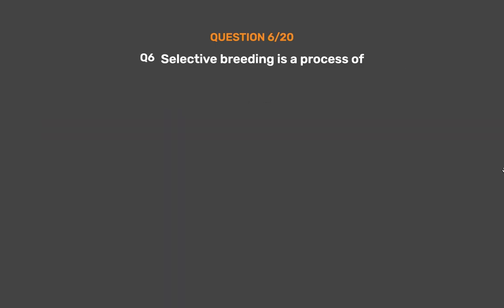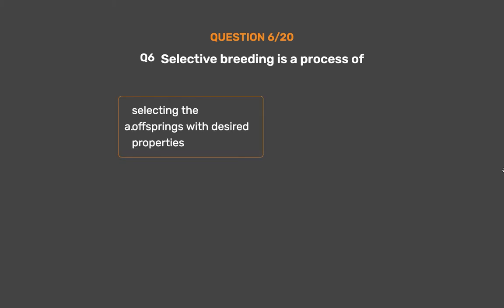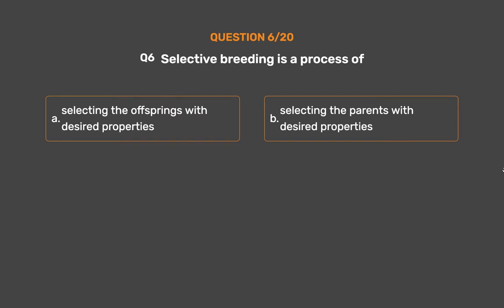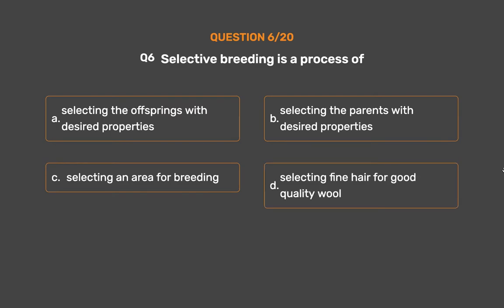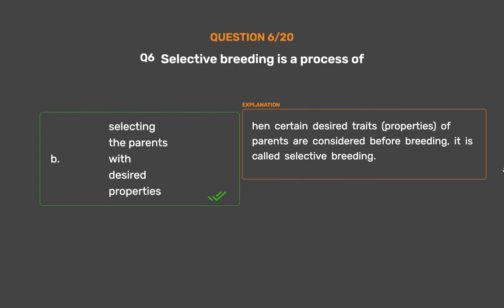Question No. 6. Selective breeding is a process of — Option A: Selecting the offspring with desired properties, Option B: Selecting the parents with desired properties, Option C: Selecting an area for breeding, Option D: Selecting fine hair for good quality wool. The correct answer is Option B: Selecting the parents with desired properties. Certain desired traits and properties of parents are considered before breeding — this is called selective breeding.